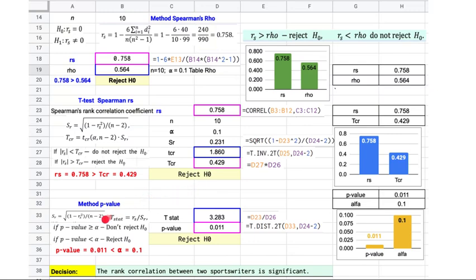The third method is using the p-value. Based on the Spearman rank correlation coefficient, we calculate the t-statistical value first. And next, calculate the p-value. Then we compare p-value with alpha, the significance level. In this case, p-value is less than alpha, so we reject H0.